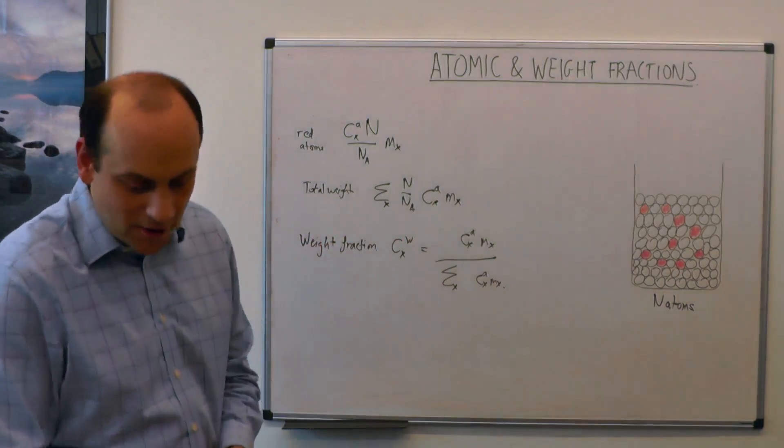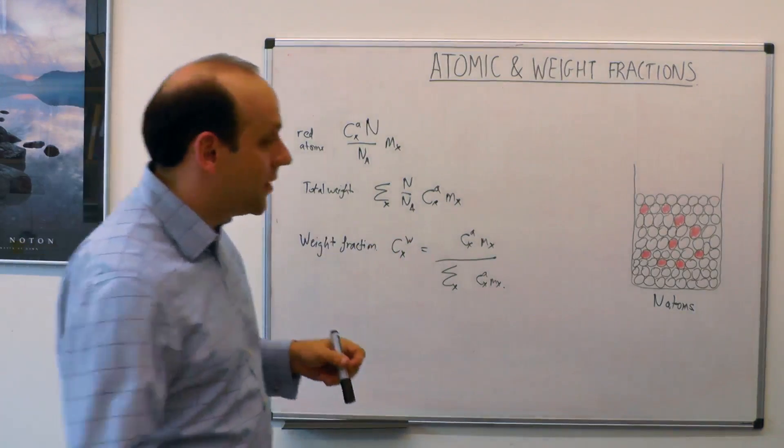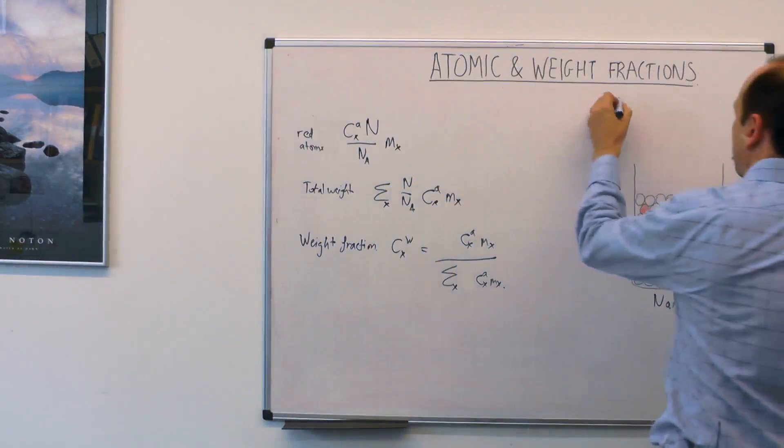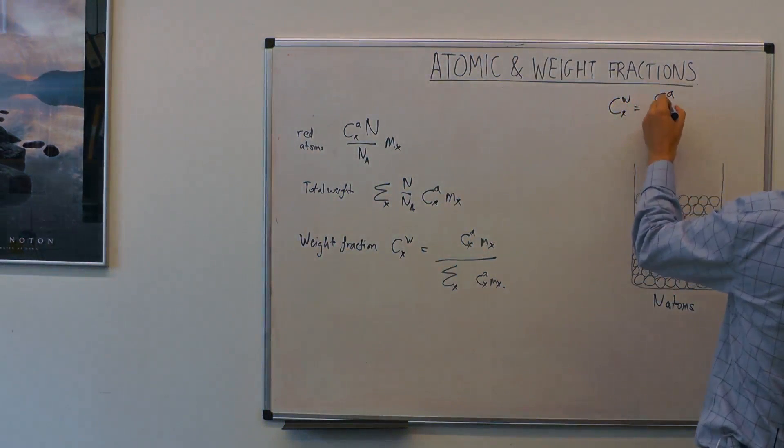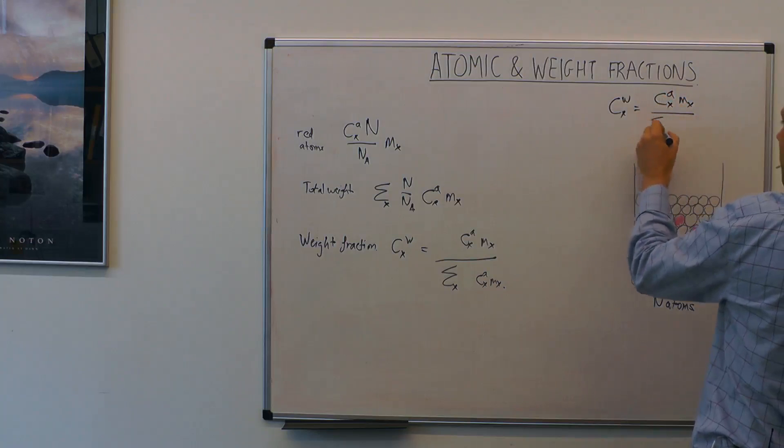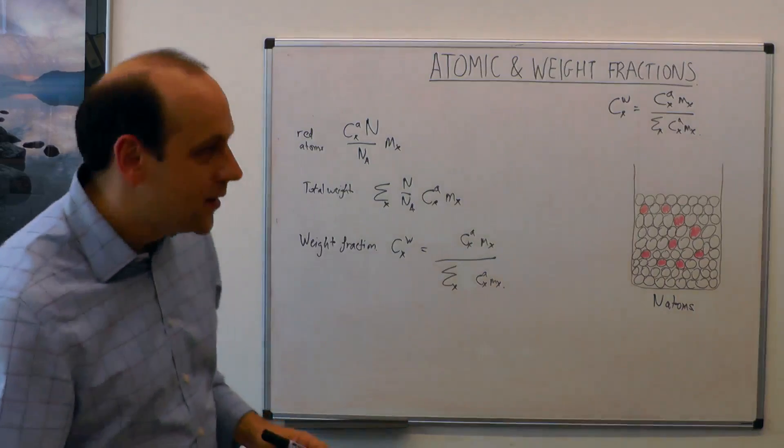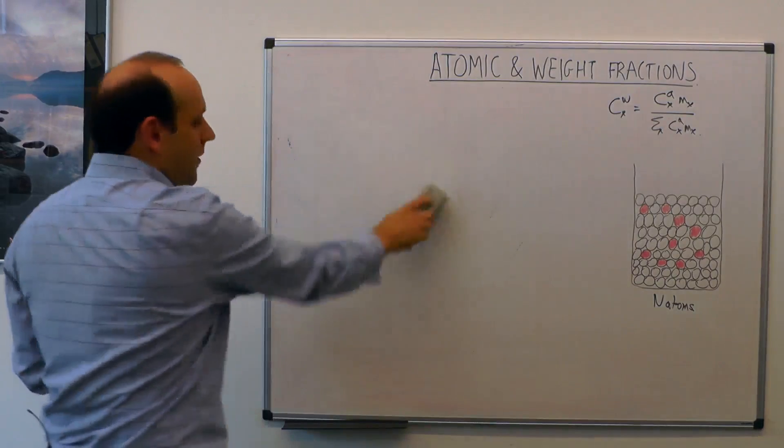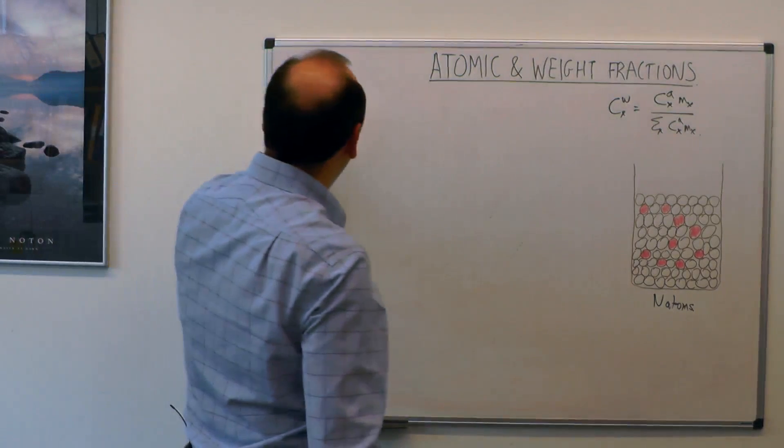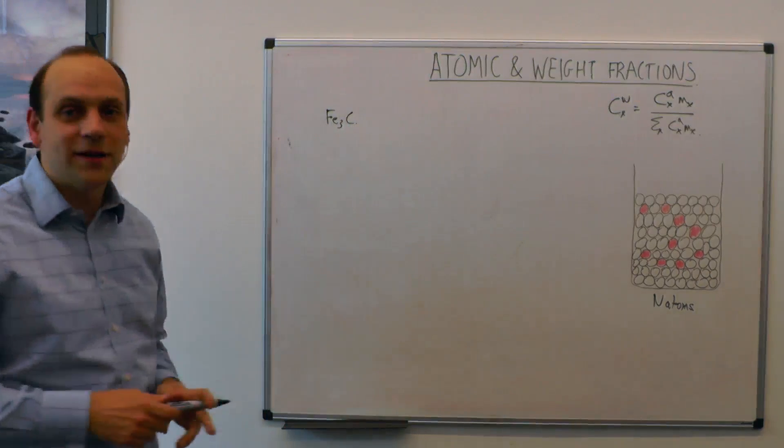Let's do an example of what that looks like. We've got c w of x is equal to c a of x m x divided by the sum over all the possible species x of the atomic fraction times m x. Let's take a compound or a phase. This is a very common phase we'll be looking at later in the course. This is Fe3C, which is called cementite, and we very commonly see in steels.